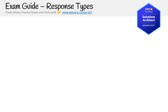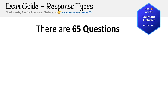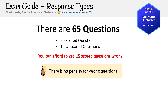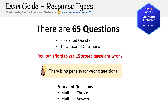Regarding response types and question formatting: there are 65 questions total — 50 scored and 15 unscored. That means you can afford to get 15 questions wrong because they'll never be scored. There is no penalty for wrong answers. The format is multiple choice and multiple answer — no labs or other formats. Questions can get pretty wordy, so when doing practice exams you need to get used to reading the flow and cutting out the filler text to understand the core question.